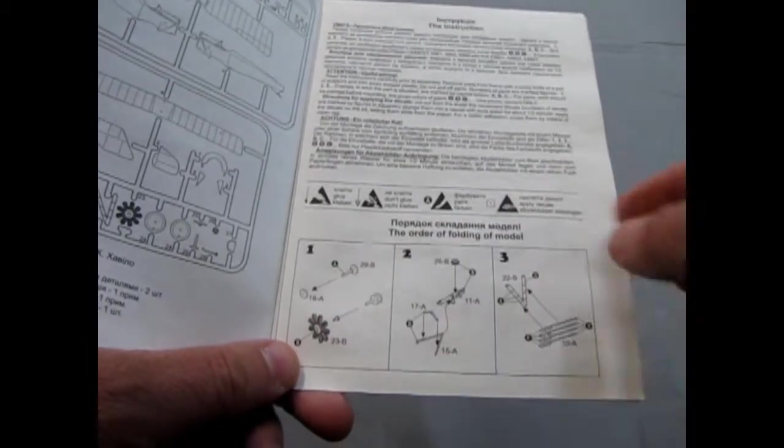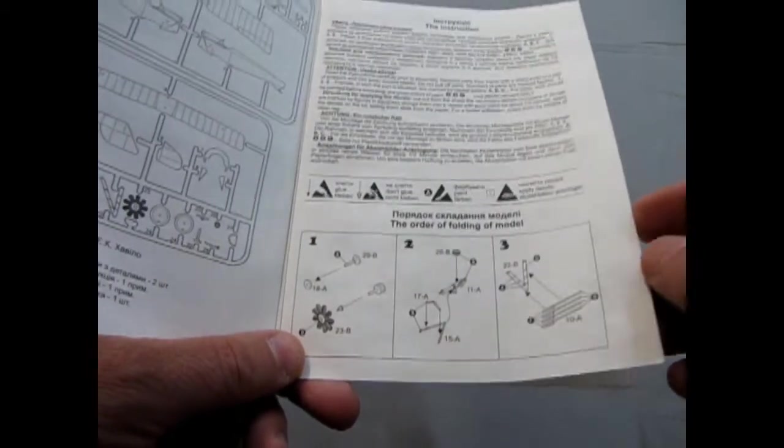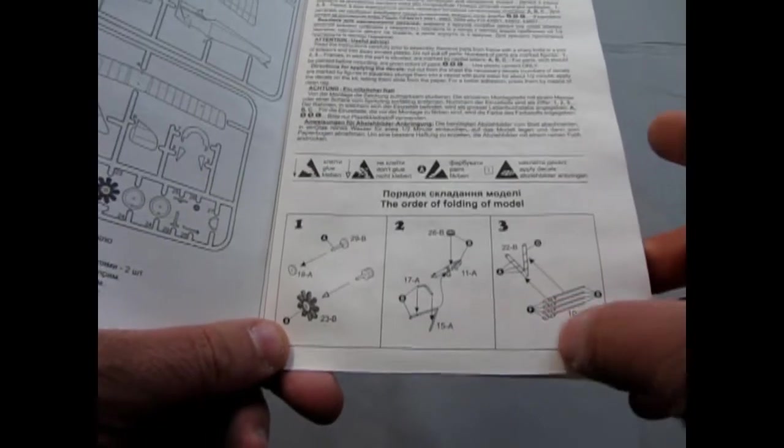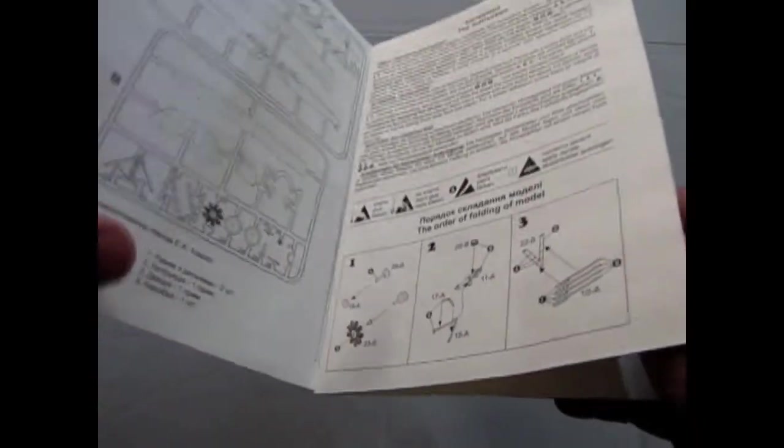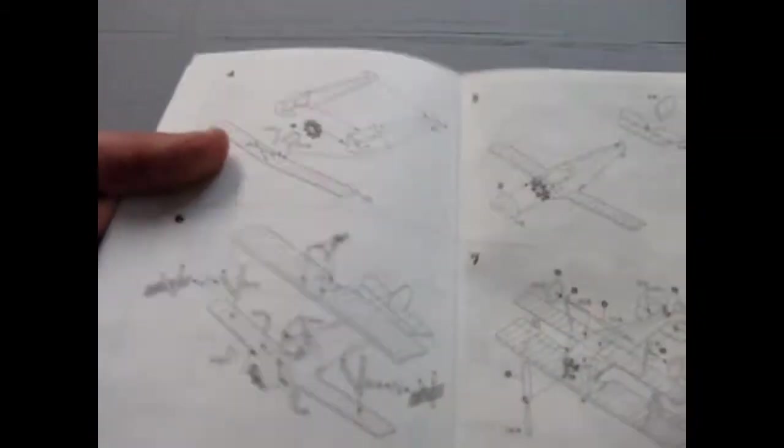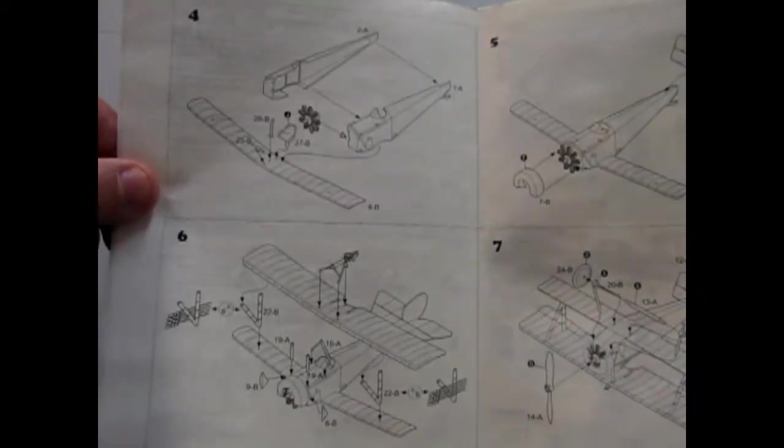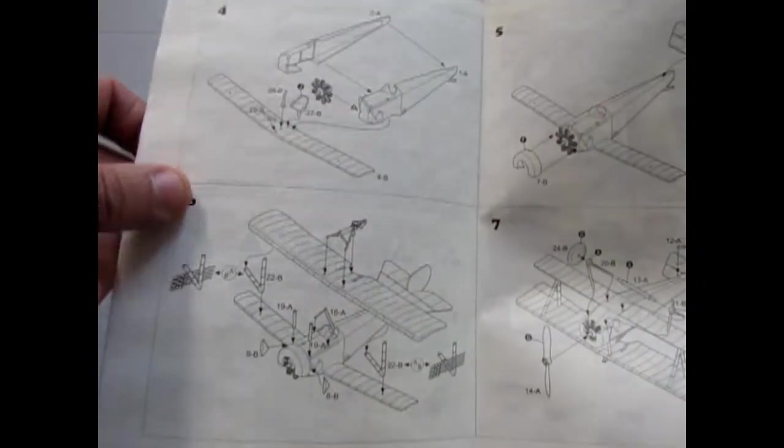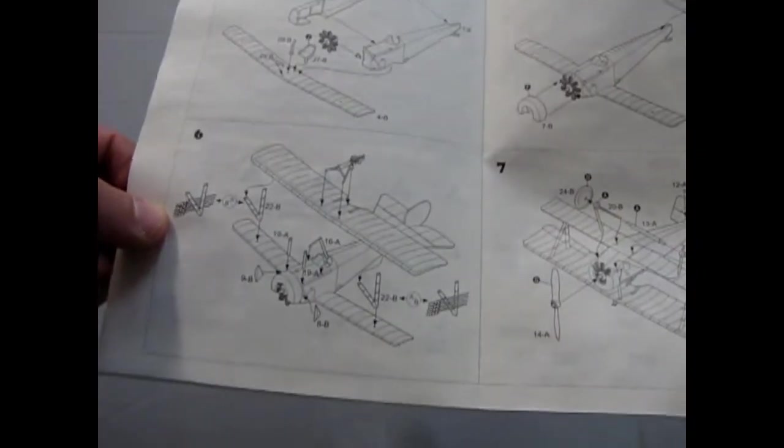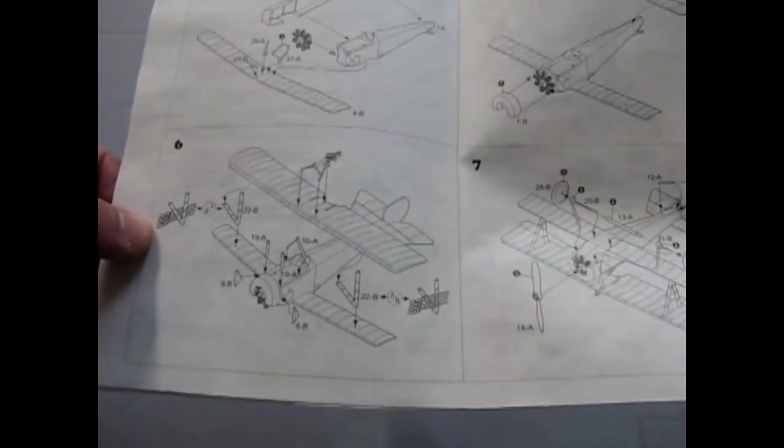And it shows you here mounting your engine and your machine guns. And this even has the little rockets that they were using back in the day, which are non-directional. You just had to point the airplane in the direction of something that you wanted to take down, usually a balloon.